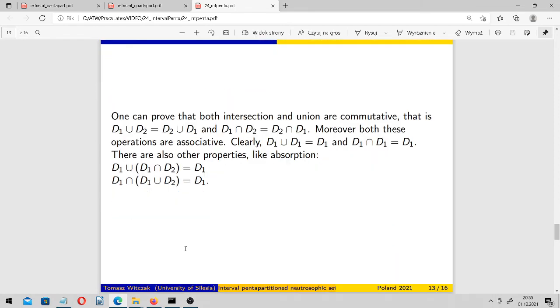One can prove that both intersection and union of these interval pentapartitioned neutrosophic sets are commutative. Moreover, both these operations are also associative.